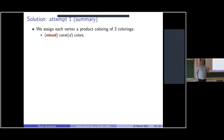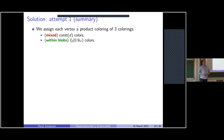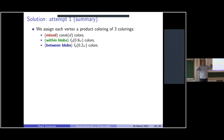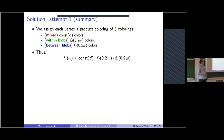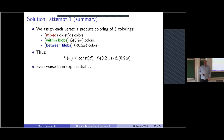Summing up the naive attempt: we assign each vertex a product coloring of three colorings — first, resolving mixed connections using a constant number of colors (depending on d); second, coloring vertices within blobs in f_d(0.9ω) colors; third, coloring across color classes in f_d(0.2ω) colors. This gives f_d(ω) ≤ C · f_d(0.2ω) · f_d(0.9ω) — but this recurrence is actually worse than exponential, so something needs to be fixed.